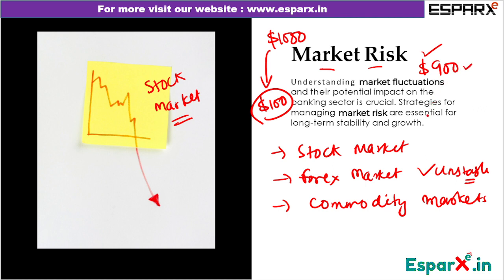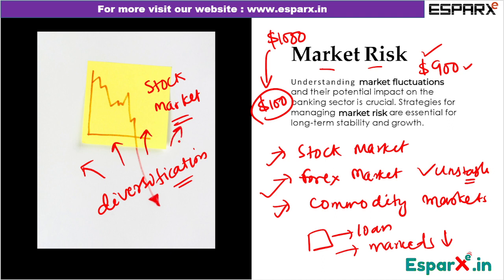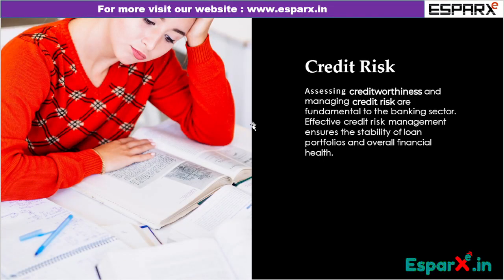Due to investment in the forex market, stock market, or commodity market, the bank can face significant losses. Banks not only lend money as loans but also invest in external markets, so when the market crashes, the bank faces market risk. A very important strategy here is diversification of funds — so that a loss in one area is offset by profit in another.